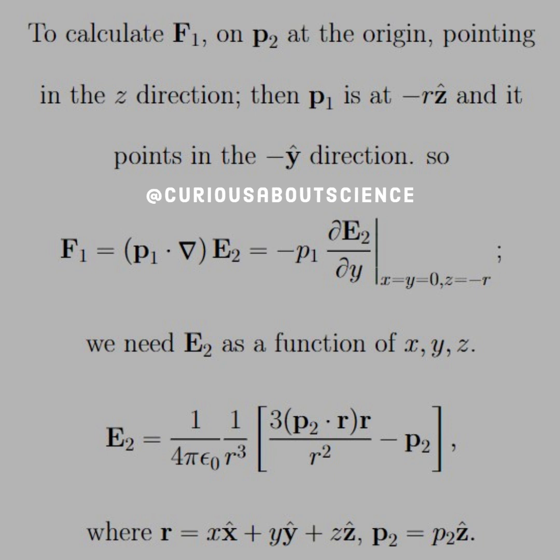So F1 then is equal to P1 dotted with del times E2. But when we simplify this, we know that the partial derivative with respect to y needs to be evaluated where x and y are equal to 0 and z is equal to negative r. So we need to find E2 as a function of x, y, z. We could write the electric field as 1 over 4πε₀ where we had 3P dotted with the r hat multiplied by r hat minus the dipole moment P. Here we put it in for our scenario and factor that in r cubed out front.